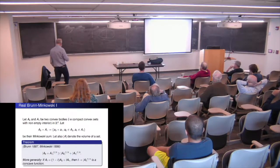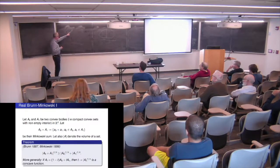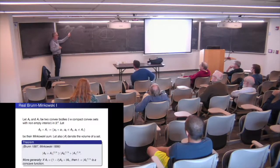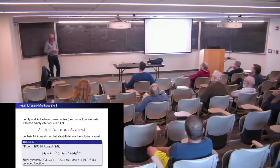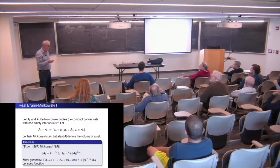You can formulate it more generally: if you take a convex combination, you get a concave function. So it says the Minkowski sum is pretty big. When one of them is a ball with radius epsilon, the sum is all points whose distance to A0 is smaller than epsilon. The inequality is related to the surface area of the boundary, so it implies the isoperimetric inequality for convex bodies — but it is much stronger than that.